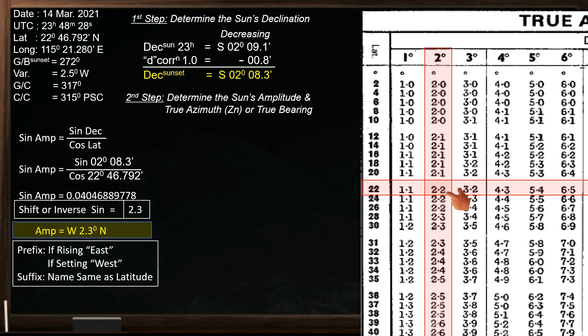We got 2.2 degrees. So the sun's amplitude is west 2.2 degrees north. The prefix name is west since the body is setting, and the suffix name is same name as latitude, which is north.